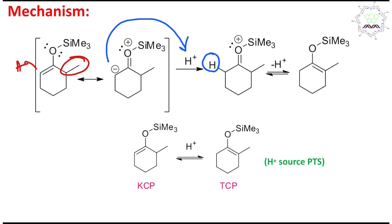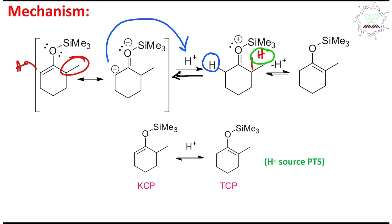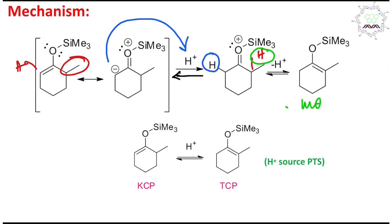Not only methyl — you can consider that there is another hydrogen here as well. Now, what can happen? This blue proton could be eliminated and the molecule can go back to the reactant side — one possible pathway, one reversible reaction. Another possibility is that this proton could be abstracted, and it can convert into this enolate. And you can consider this is the more substituted enolate.